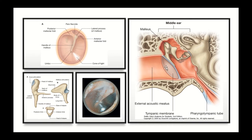When sound waves hit the tympanic membrane, they vibrate it, and these vibrations are transmitted through the ossicles: from malleus to incus, from incus to stapes. The stapes acts as a piston and punches into the inner ear, transmitting vibrations from the air medium of the middle ear cavity into the fluid medium of the inner ear. In the inner ear, these vibrations are converted into electrical signals, which will be discussed in a subsequent lecture on ENT or neuroanatomy.